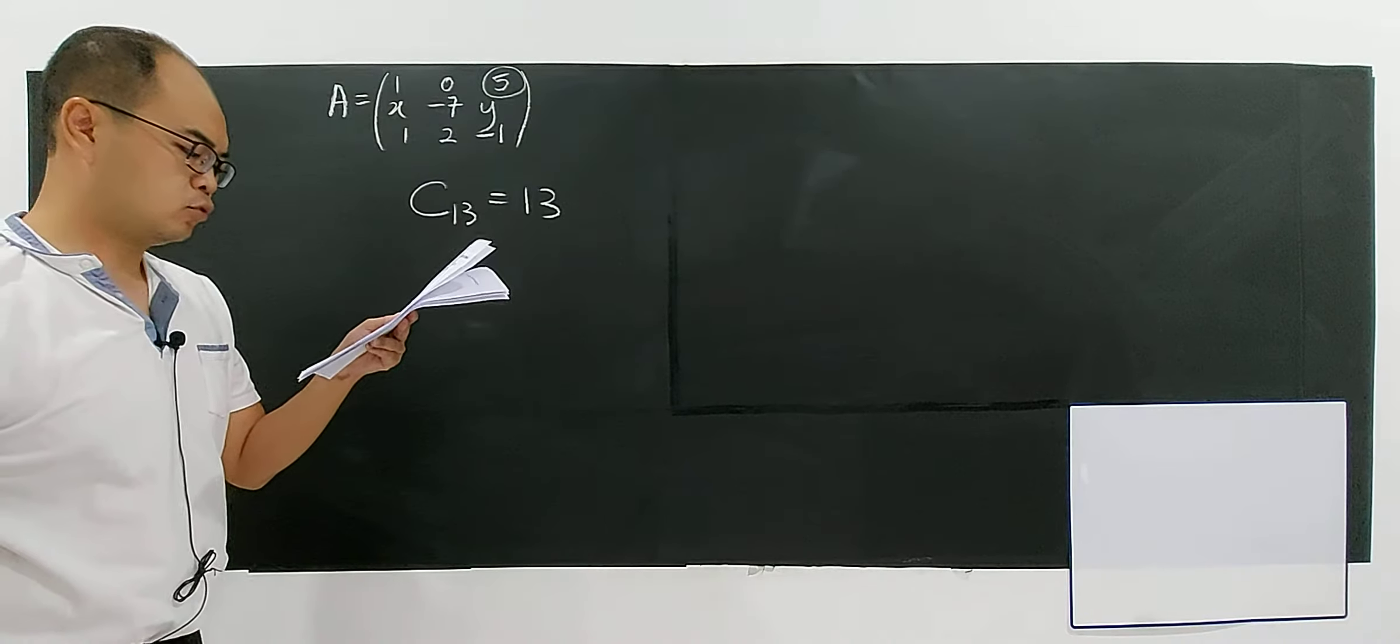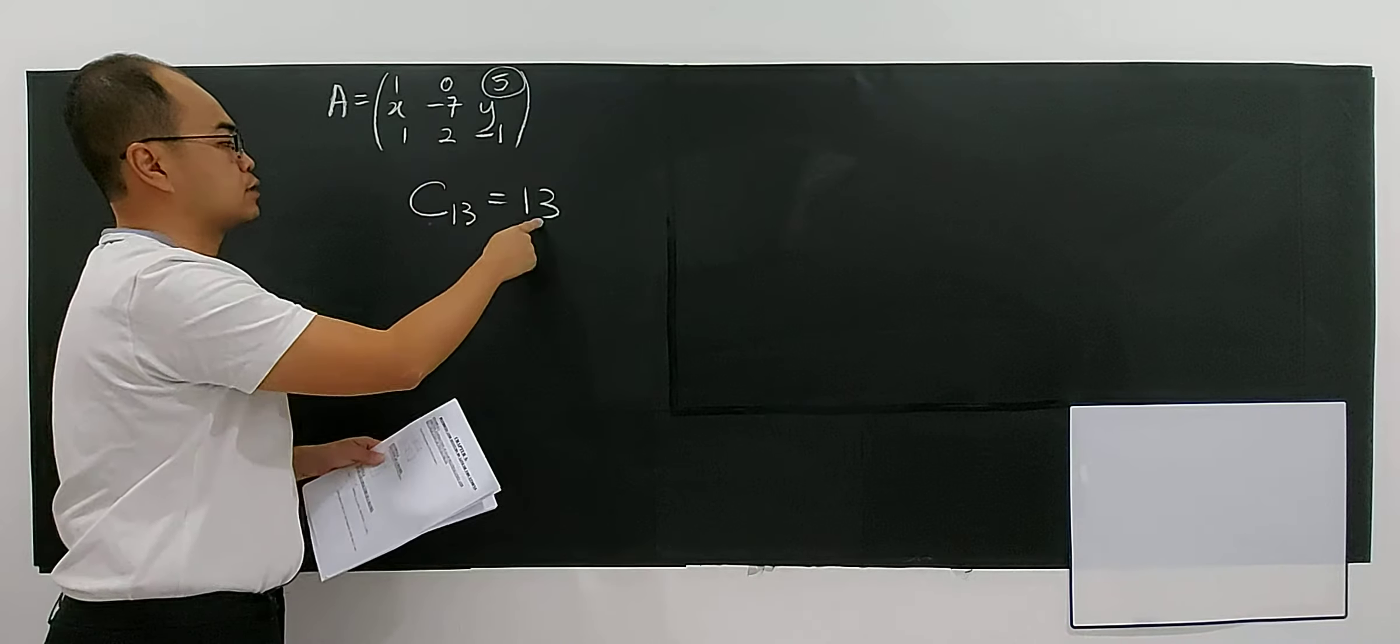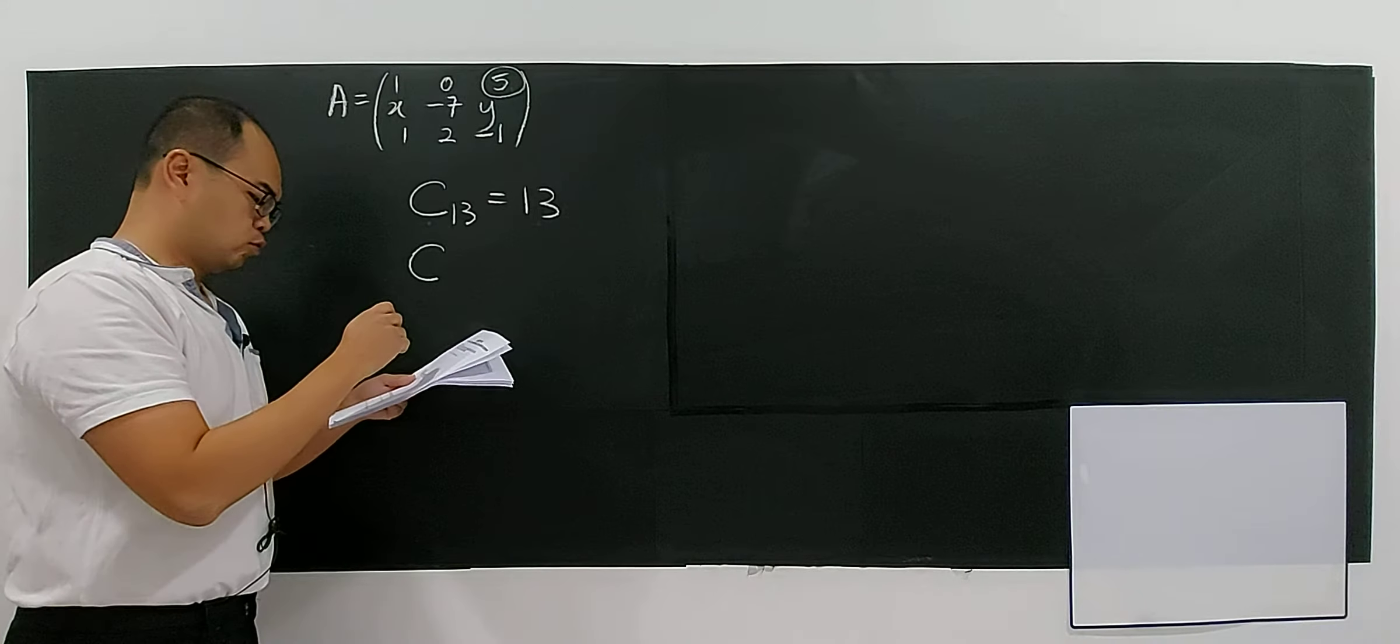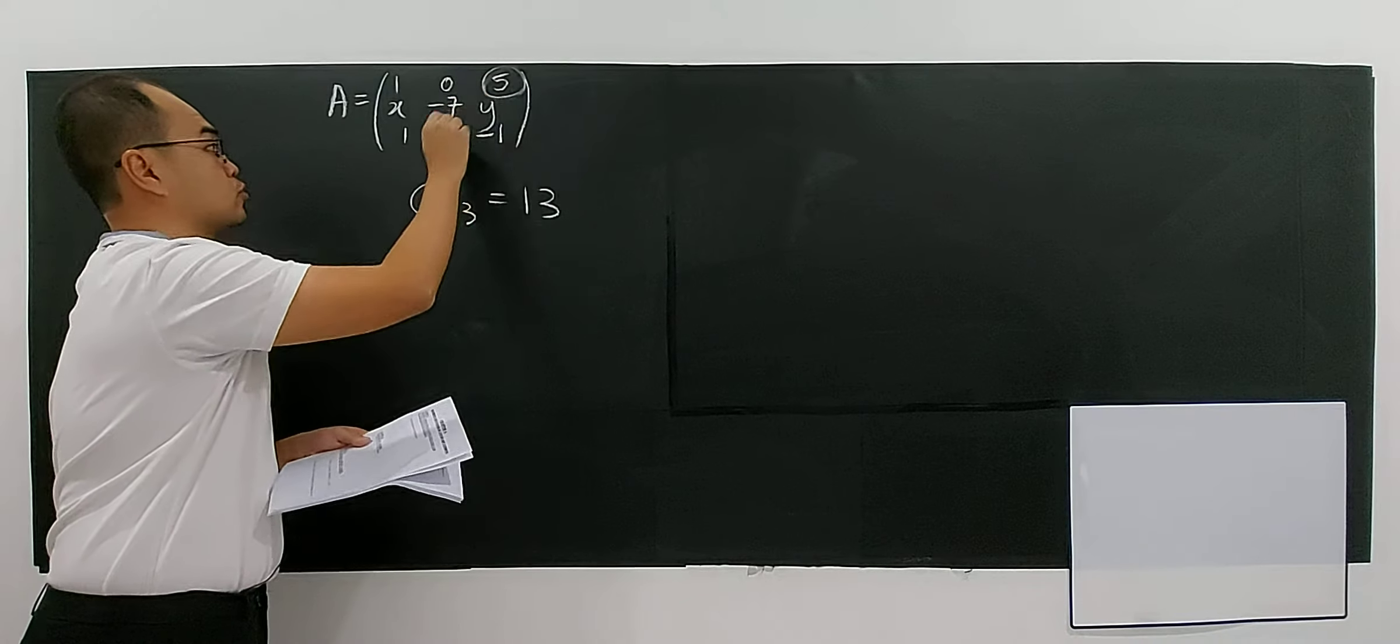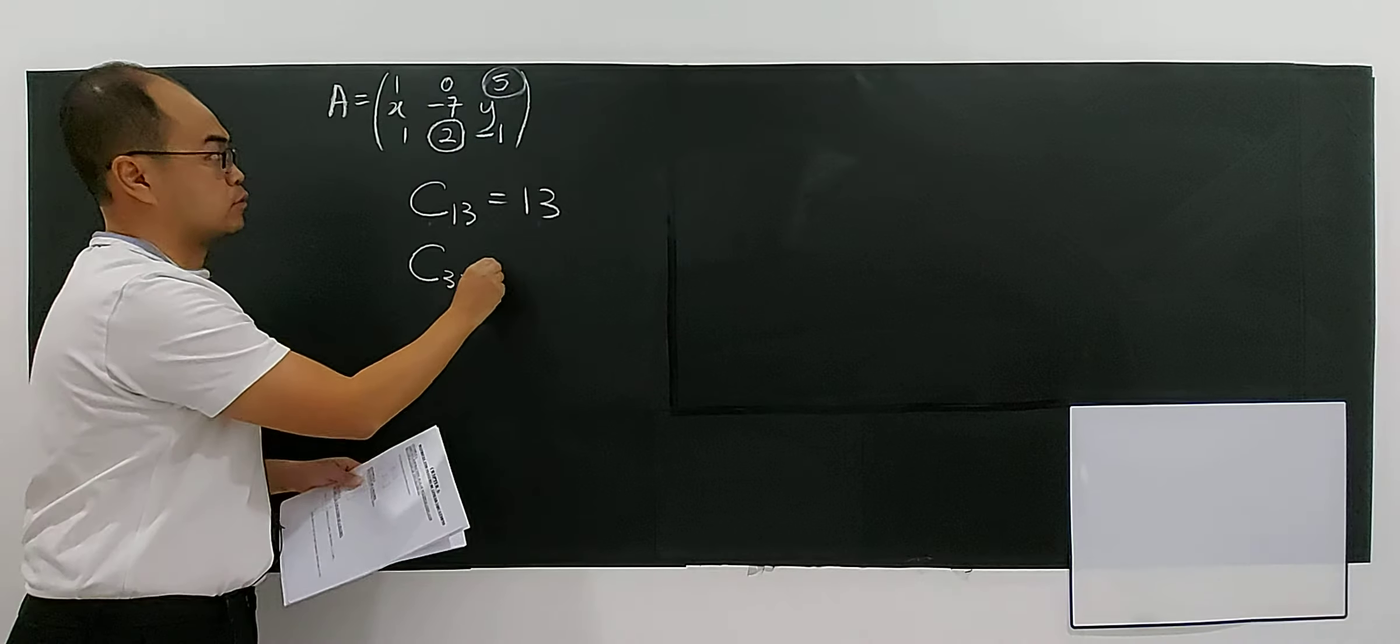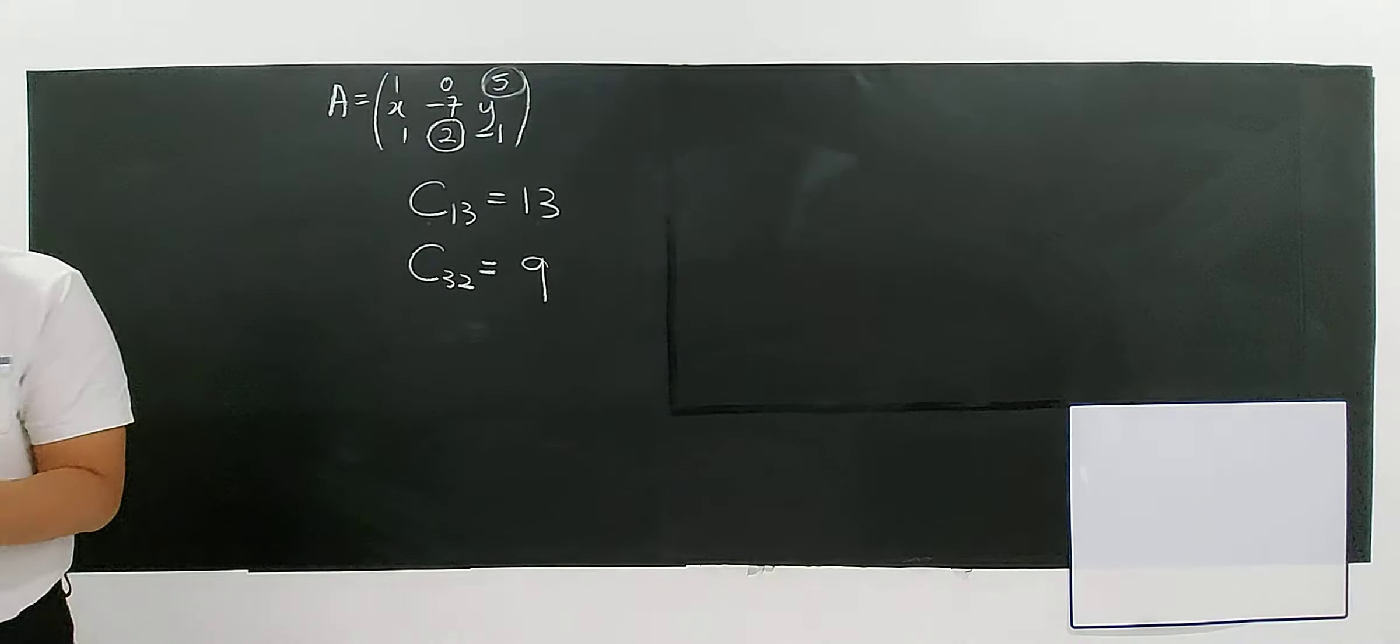And the cofactor for 5 is 13. And the cofactor for 2, this one, right? The cofactor for 2 means the third row, second column, right? Which is 9, right? Okay, this is the 2 information given.